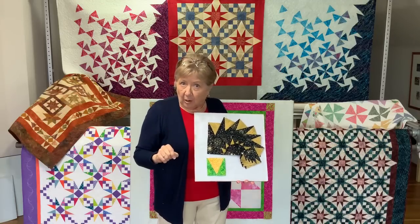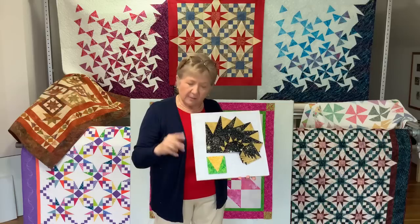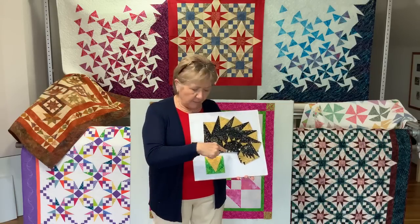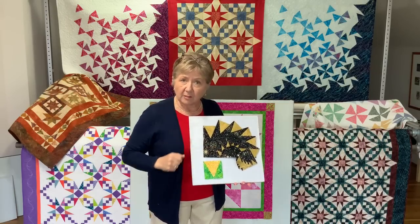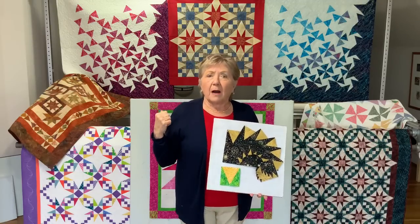This is a basic building block. It's a square that's divided by two seams. A seam that goes from the corner to the center and a second seam that goes from the other corner to the same center. And you can see it in all of the quilt projects that are behind me here.